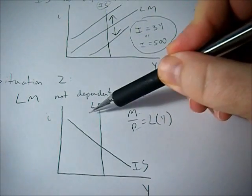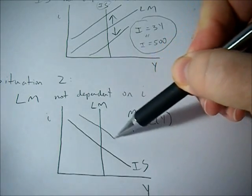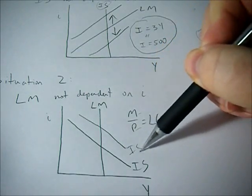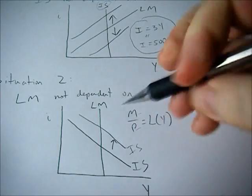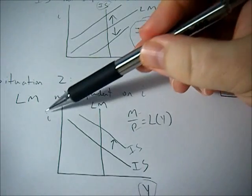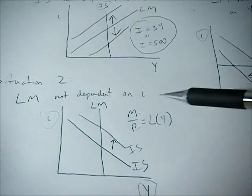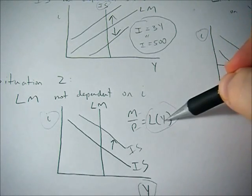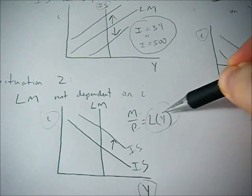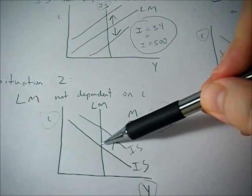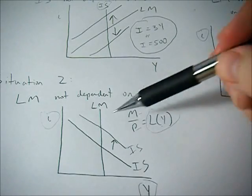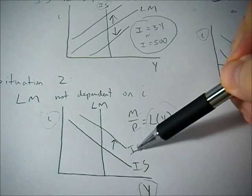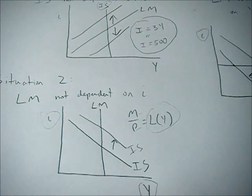And here, if we change the IS curve, say through fiscal policy, then we see no change in GDP, only a change in the interest rate, because people's preference for money only depends on GDP. So the interest rate can fluctuate up or down, and that has no effect on people's demand for money. And so the interest rate just rises and investment falls by an equal amount equal to that change in the IS curve.